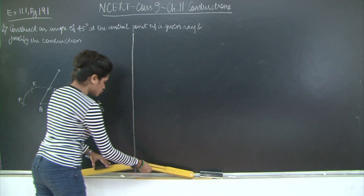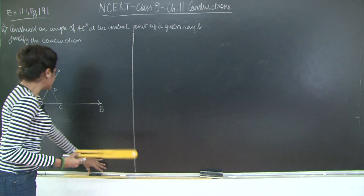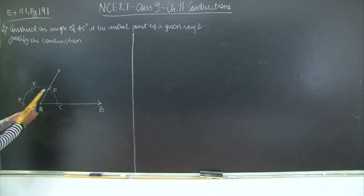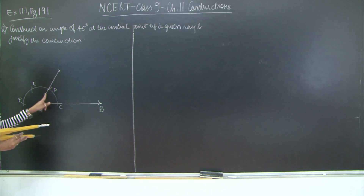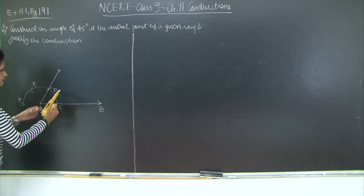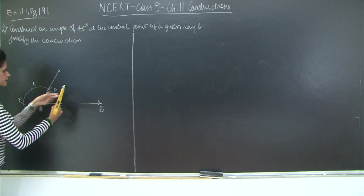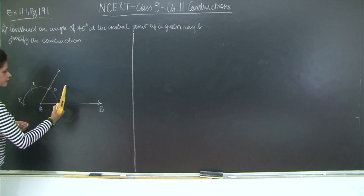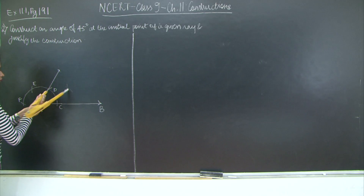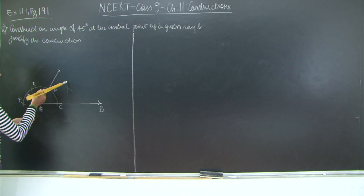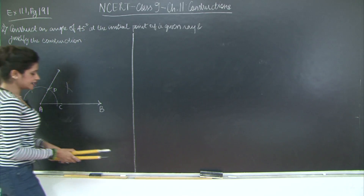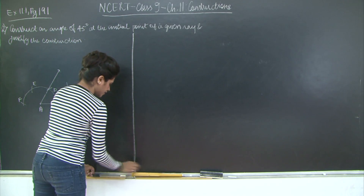Now I am going to bisect angle DAB. It is the same angle — you already have the arcs over here. So let us bisect this angle. So my angle DAB is bisected here. I will call the point of intersection as E.